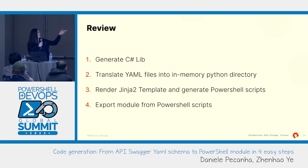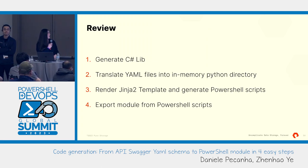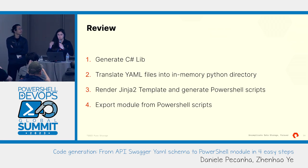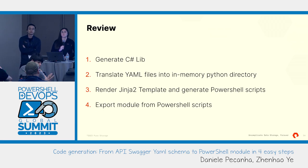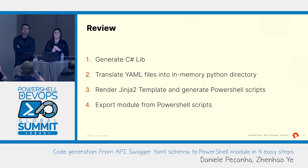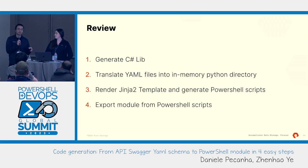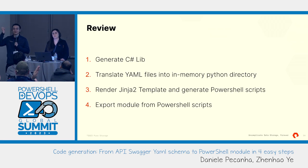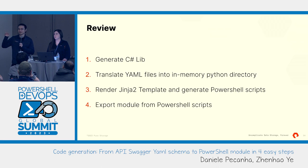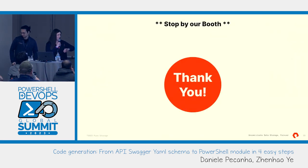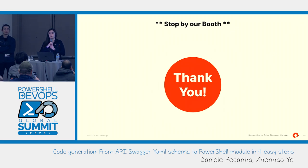Quick recap: four steps — generate the C# library, translate the YAML files, render your Jinja2 template, and publish your module. For this single example it takes about one second to generate. It's fast because it's processing Python in memory on your local computer. Even as things get bigger, it won't take very long. We're a little over time, but we'll be outside at the booth, and you have our contact info — if you have questions, just reach out. Thank you for coming.